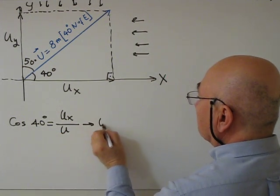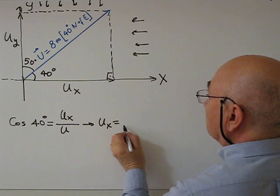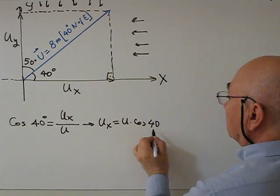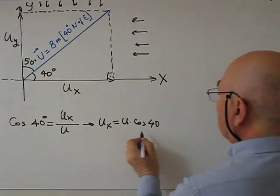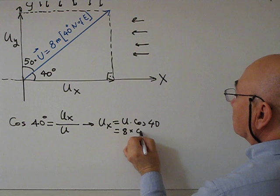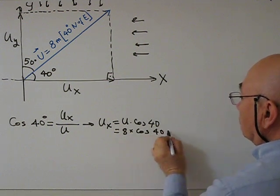So u is 8 times cosine 40, so we get this 6.1 meters.